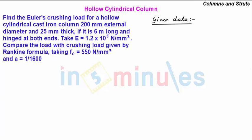Our given data is: first thing we have cast iron hollow cylindrical column. The external diameter capital D is given as 200 mm and the thickness t is given as 25 mm.